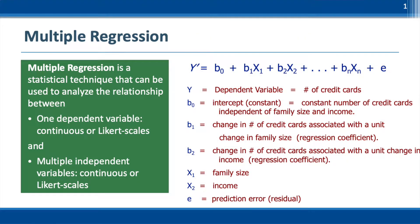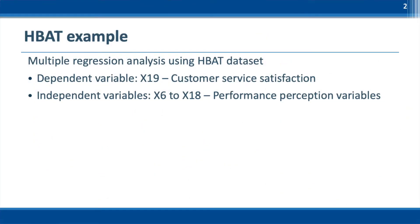The Multiple Regression method is used when we have one metric dependent variable and multiple metric independent variables. In this example, we will use the HATCO batch dataset for the analysis. The dependent variable is x19, customer satisfaction, and we have 13 independent variables, x6 to x18.